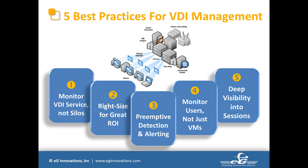Fourth, monitor users not just VMs — look at it from a user perspective. Only when a solution does that can it understand the language and tell you which user is being affected. Fifth, deep visibility into sessions — if it's a Citrix session, we look into the HDX/ICA protocol and give details about all the virtual channels; if it's PC-over-IP, we look at latency, compression, and bandwidth. With EG you can monitor both your Citrix connection broker and VMware pieces and correlate that information across technologies.